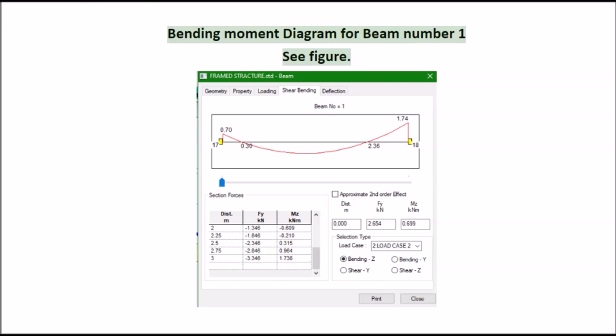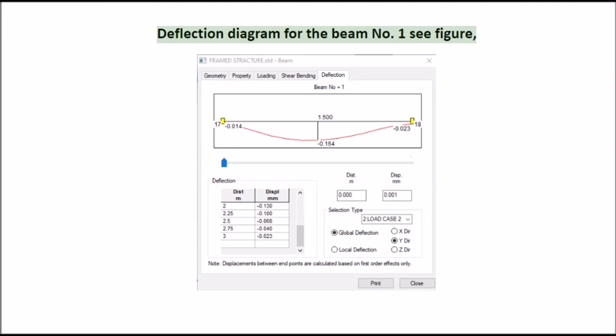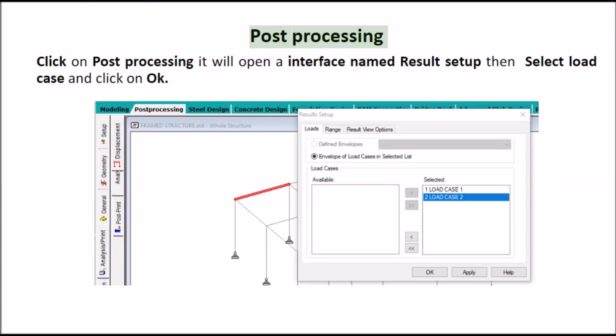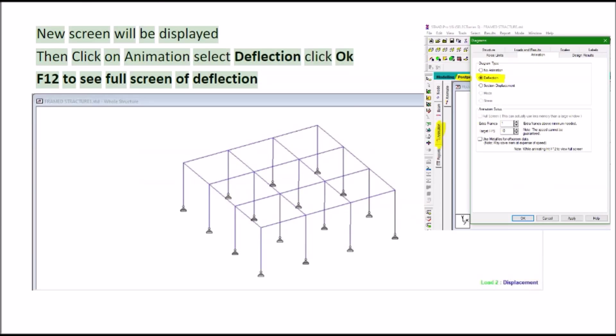See figure deflection diagram for the beam number one. Post-processing click on post-processing it will open a interface named result setup then select load case and click on ok new screen will be displayed then click on animation select deflection click ok f12 to see full screen of deflection.